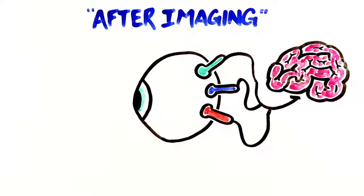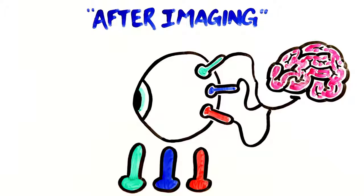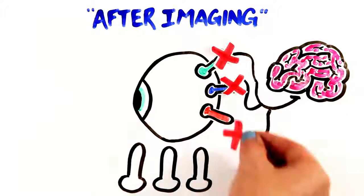After staring long enough at the brightly colored image, your cones slowly become fatigued and the supply of photopigment in the respective cones becomes exhausted, which ultimately stops sending signals to the brain.